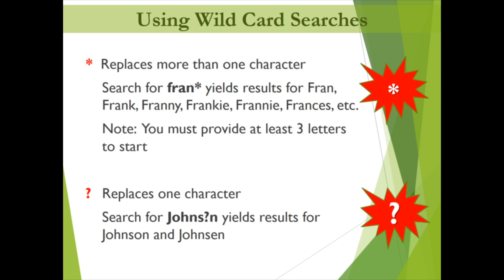Ancestry products also allow the use of wildcards in searches to bypass problematic spelling of names. The asterisk will replace one or more characters — for example, typing F-R-A-N-* will return results for Fran, Frank, Frankie, Franny, Francis, etc. You need at least three letters to start. The question mark replaces one character — for example, if searching for Johnson but unsure whether it's S-O-N or S-E-N, type J-O-H-N-S-?-N. You can even use both wildcards within the same name.